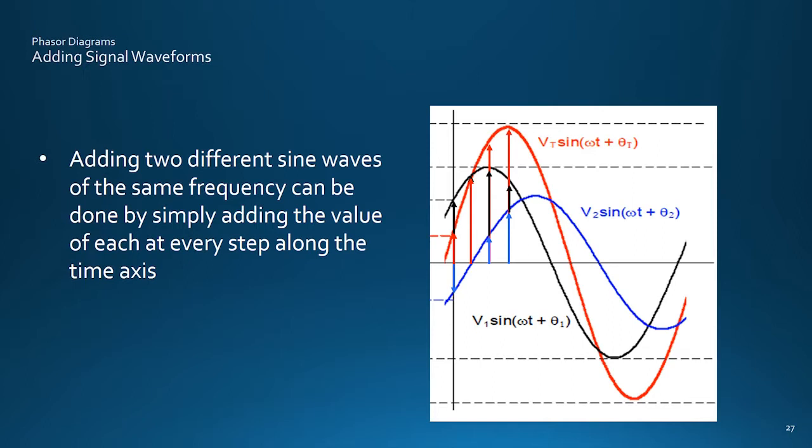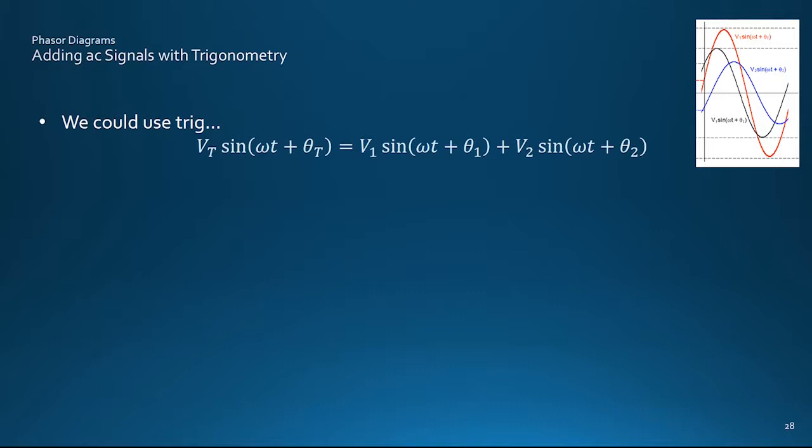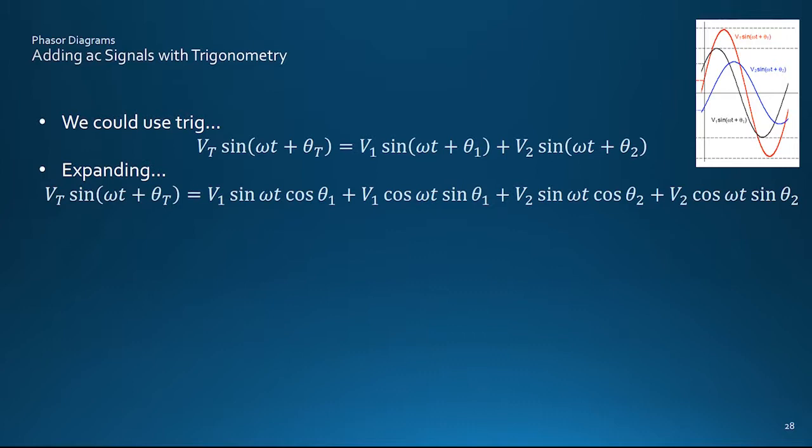We could do it by adding up the two graphs point by point, along the time axis like so. Although that could get a bit tedious. A better analytical approach is to use trig to add together the two components. If locked in with a book of trig tables, the result for the two component bits of the answer can be found.